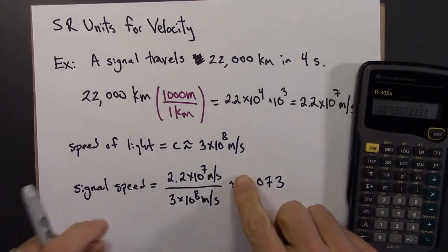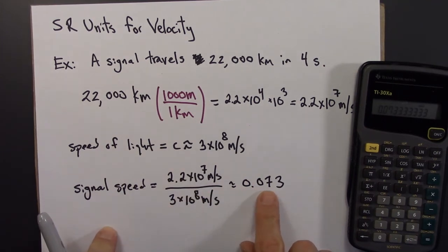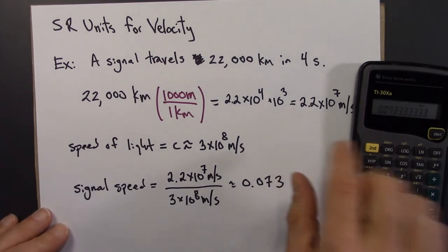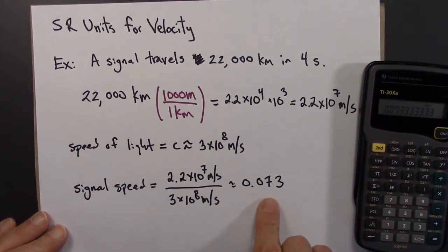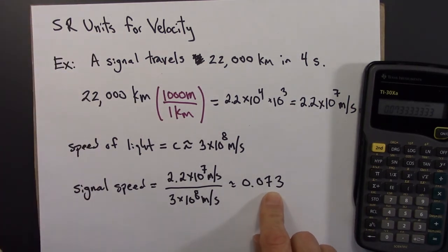So notice that this way of expressing the speed, I end up with a unitless number. Because what I'm doing is I'm saying how fast the signal is expressed as a fraction of the speed of light. So what this means is that this signal is traveling at 7.3% the speed of light.